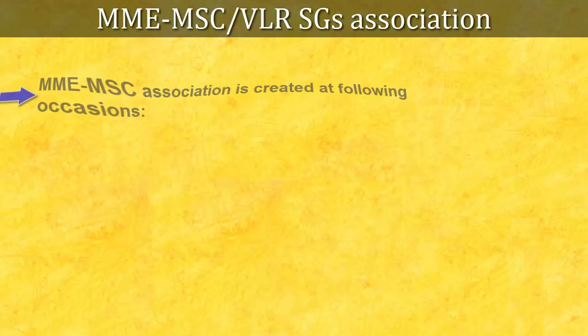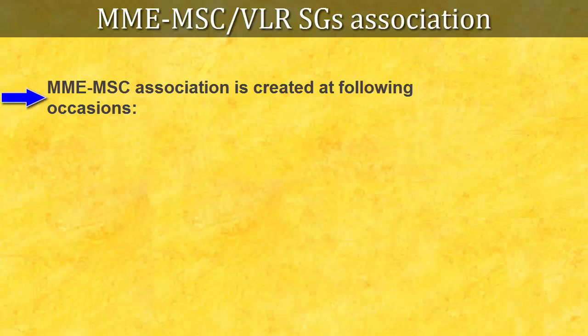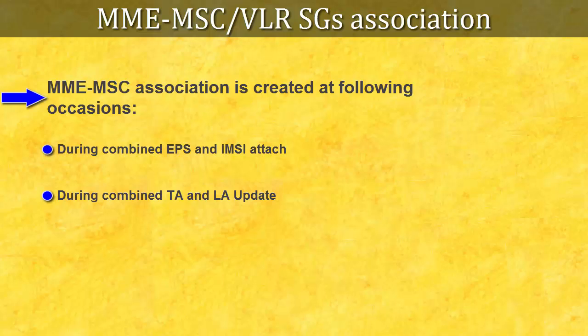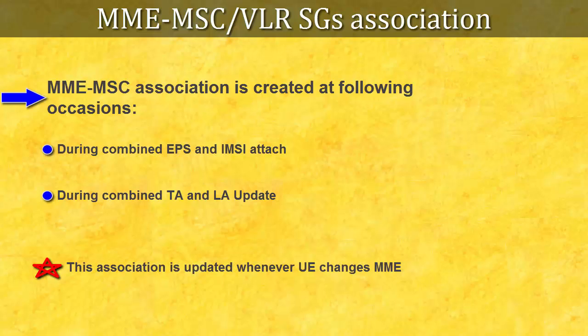There has to be an association between MME and MSC over the SGS interface before these two entities can exchange any information related to any UE. This MME and MSC association is created at the following occasions: during combined EPS and IMSI attach, and during combined tracking area and location area update. Remember, this association is updated whenever UE changes MME.